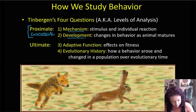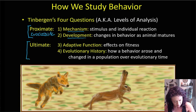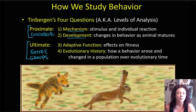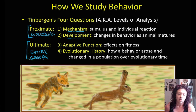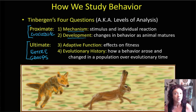Ultimate causes are bigger picture. Instead of this individual organism, think about the behavior of entire groups of organisms. Why would this behavior exist in this entire group of prey animals? All rabbits flee when they see a predator — this is an almost universal thing. How did that come to be? Why does that characteristic evolve? There are two major ways you can examine this: you can look at the adaptive function of the behavior, or its evolutionary history.